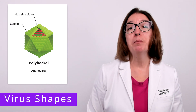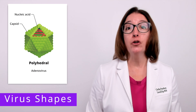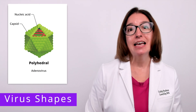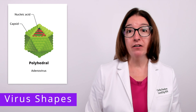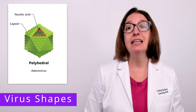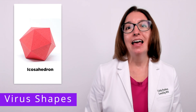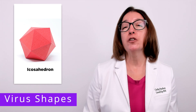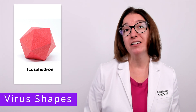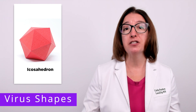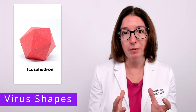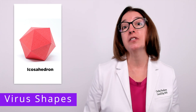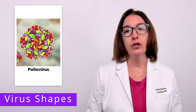A virus with a polyhedral shape has a nucleic acid surrounded by a multi-sided capsid. An example of a virus with a polyhedral shape is the adenovirus. An icosahedron is a polyhedron with 20 equilateral triangular sides, which makes the virus appear spherical in shape. An example of a virus with an icosahedron shape is the poliovirus.